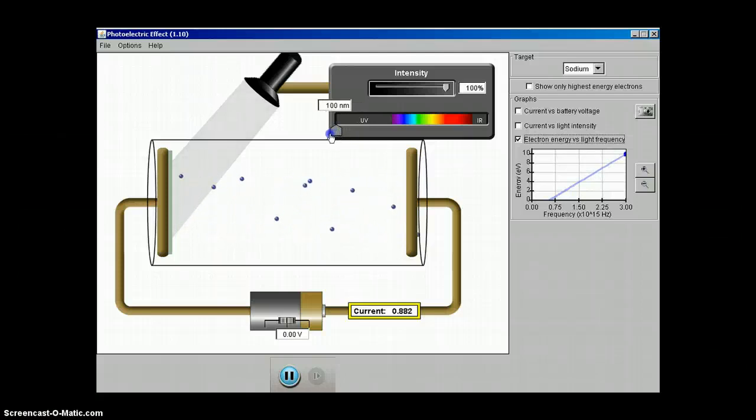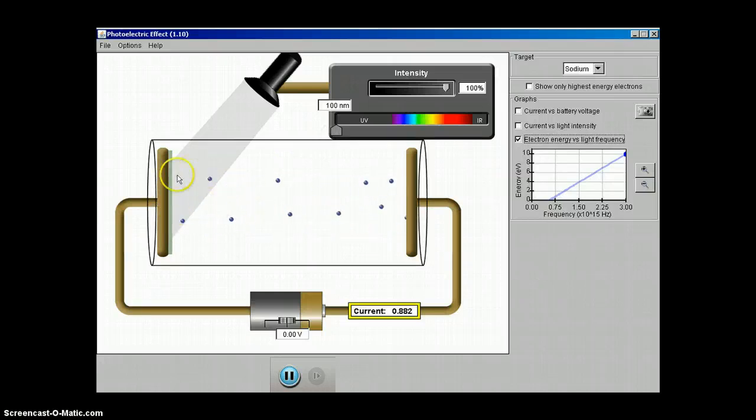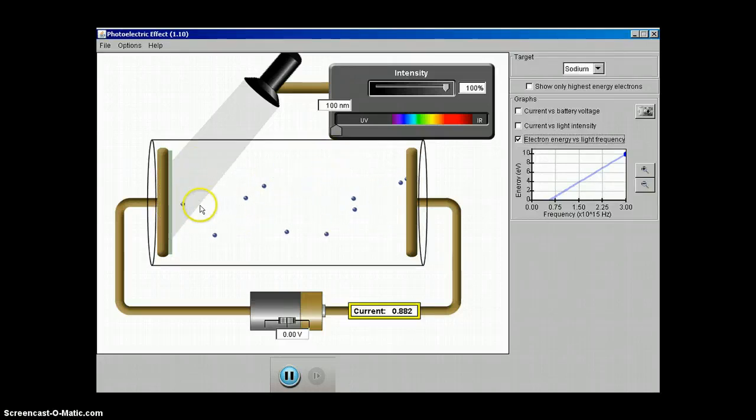You can clearly see that as we do that, the photoelectrons fly off of this sodium plate with more kinetic energy. So the higher the frequency, the more energy they're flying off the plate.